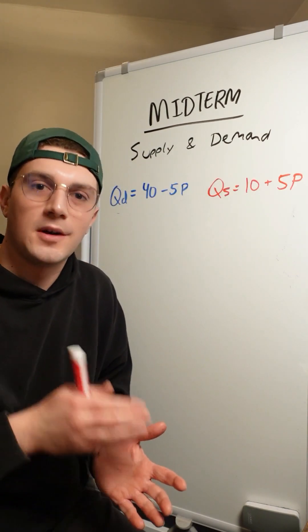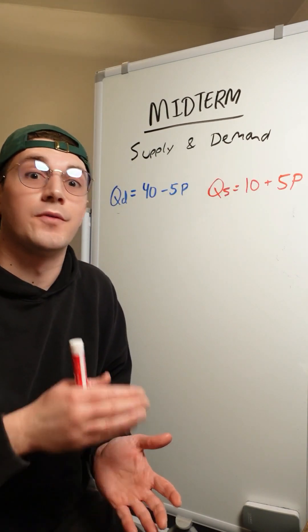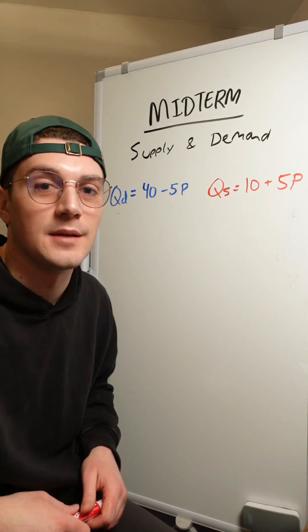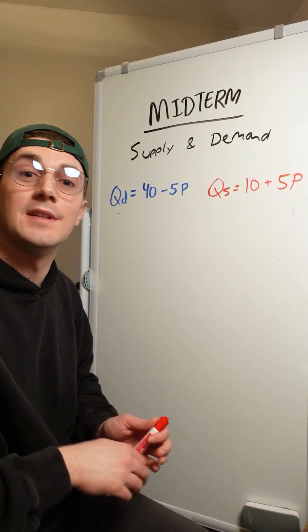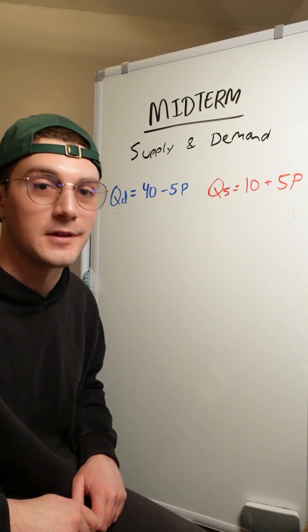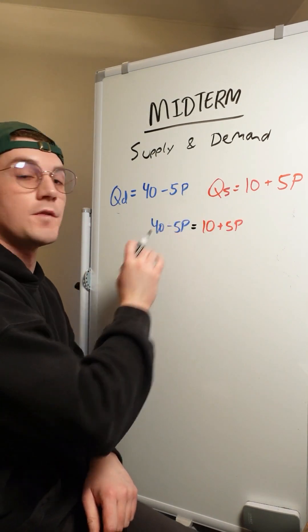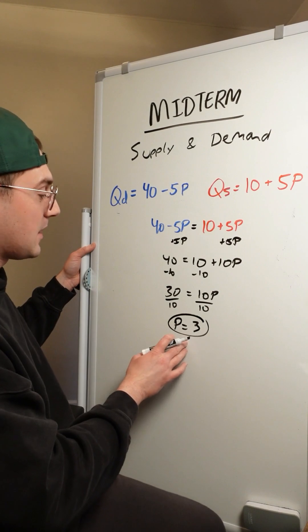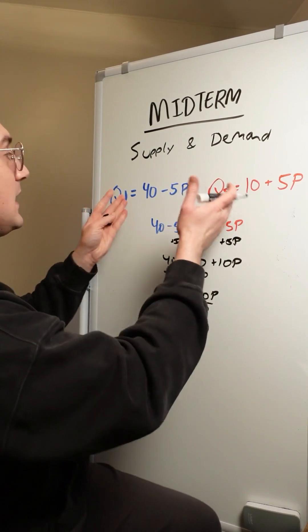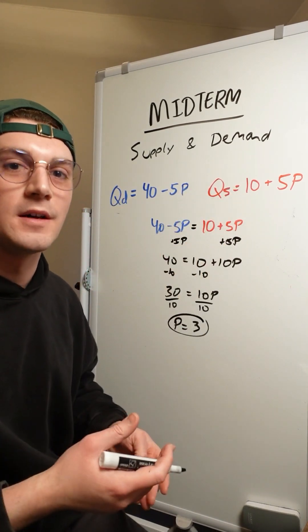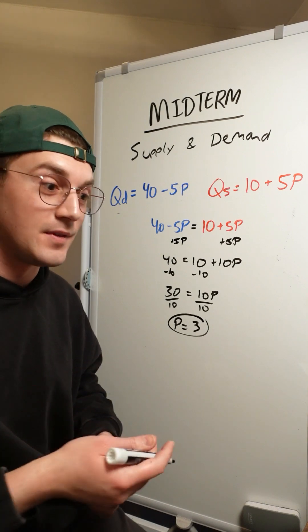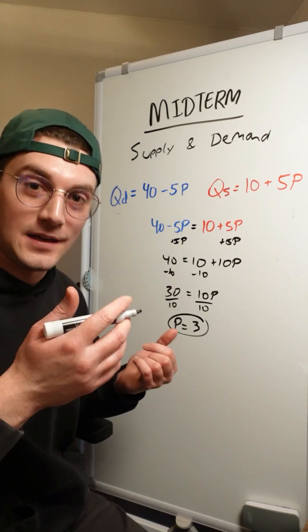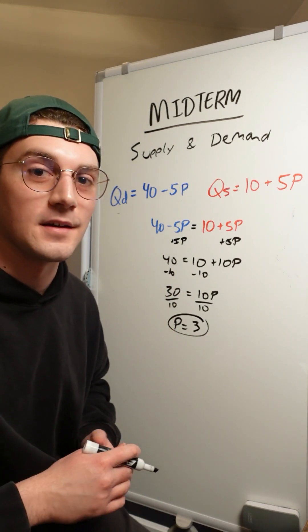Lastly, I want to make sure you understand how to solve for equilibrium when you're given equations. All you have to do is set the supply and demand equations equal to one another, then solve for P (price). From there, plug that price into either equation and you'll get the same quantity value — because at equilibrium, that's the point where the curves intersect and quantity supplied equals quantity demanded.